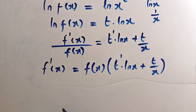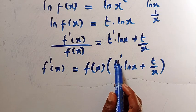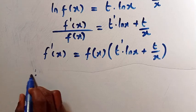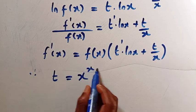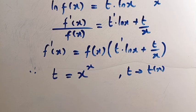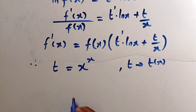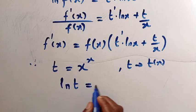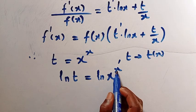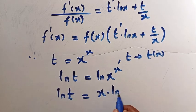Upon getting this, we have t prime of x which still needs to be found. Recalling from where we let t equal x to the power of x — don't forget that t is t of x, it depends on x. We take the derivative of this. First we introduce natural log to both sides: ln t equals ln of x to the power of x, and by the rule of logarithm, ln t equals x multiplied by ln x.